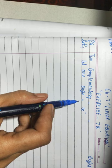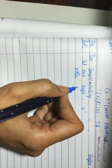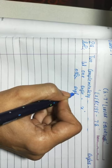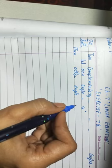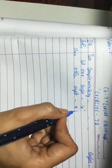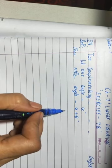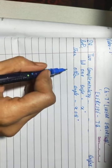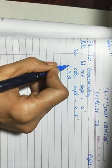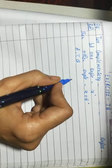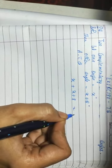Let one angle be x and the other angle be x plus 8 degrees, because in this question it is given that two complementary angles differ by 8. Because they are complementary angles, their sum will be 90 degrees — sum of two complementary angles is 90 degrees.